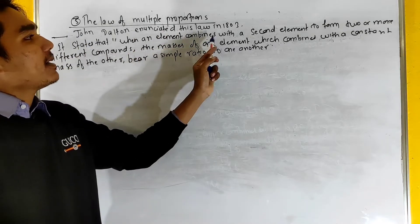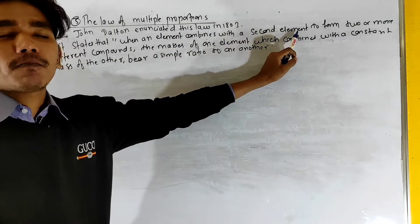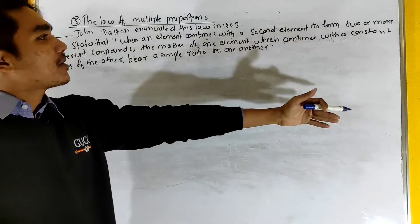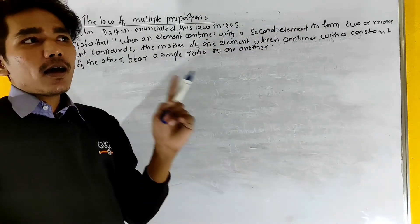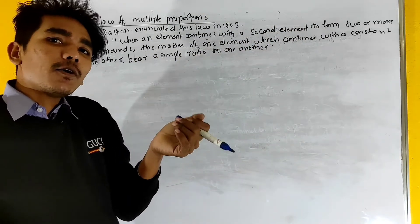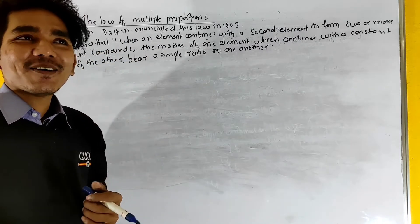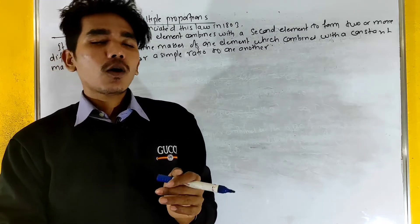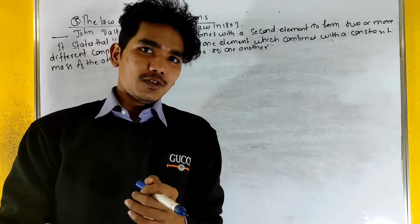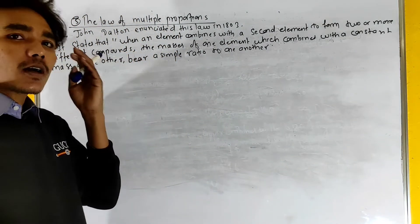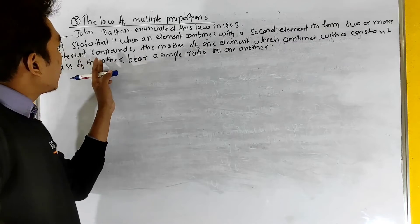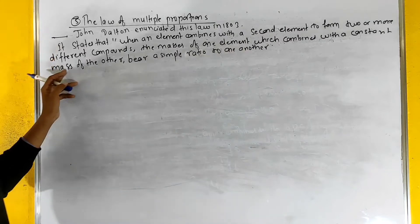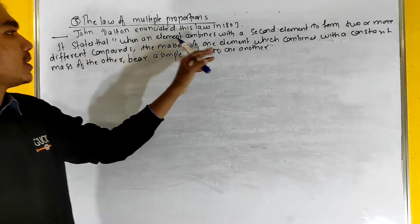When an element combines with a second element to form two or more different compounds, the masses of one element which combine with a constant mass of the other are in a simple ratio to one another.